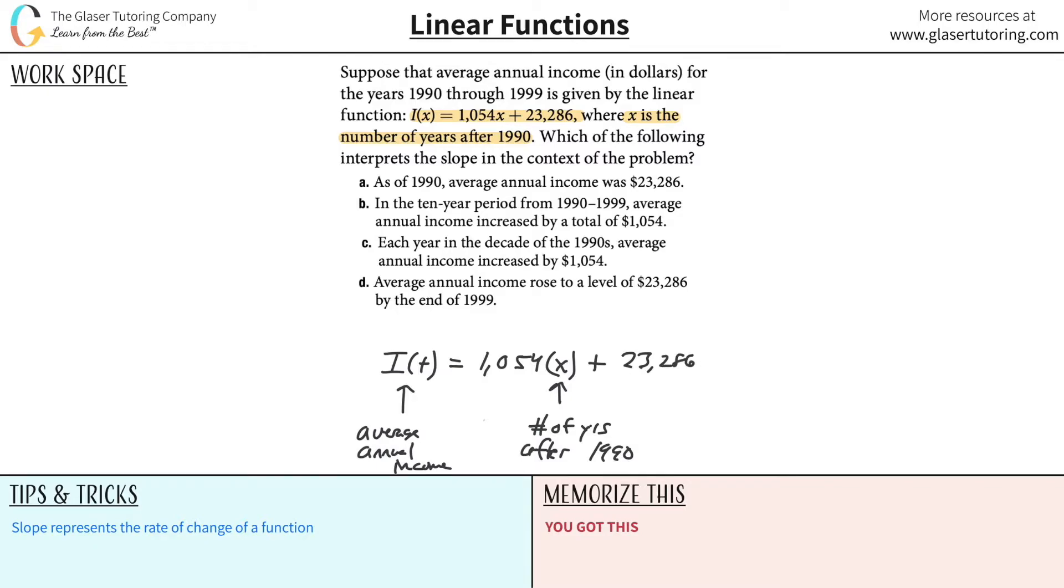Let's gain a little intuition. When x is zero, what does that mean? Well, if x is zero, that means it's zero years after 1990, or in other words, it is 1990.